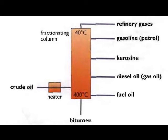The fractionating column is hot at the bottom and cooler at the top. This means that the larger hydrocarbons with higher boiling points turn back to liquid nearer the bottom. At the high temperature there, the smaller hydrocarbons stay as gas and rise up the column. The different fractions condense at different levels. At the top of the column, there are hydrocarbons with low boiling points — at 70 degrees Celsius these still have not condensed, but come out as gas at the top.